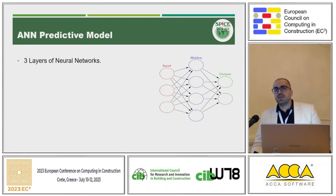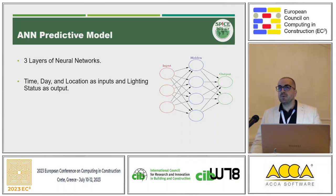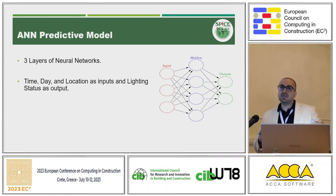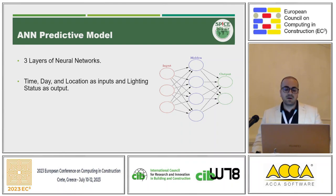We use the neural network as a prediction tool — we give it inputs and it produces a good prediction of the output. To improve accuracy, we use three layers in the neural network. The inputs are the time of day, day of the week, and the location of the room in the office, in addition to many other occupant-related inputs. The output is the lighting status — whether it is on or off. We created a large database of simulations and split it 70% for training and 30% for validation to assess prediction of lighting load.